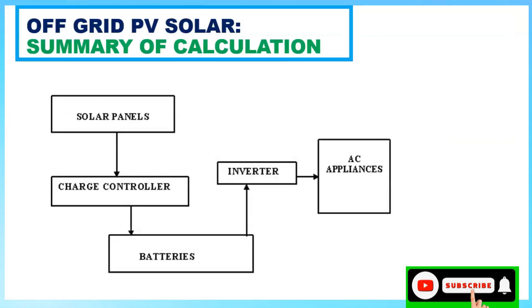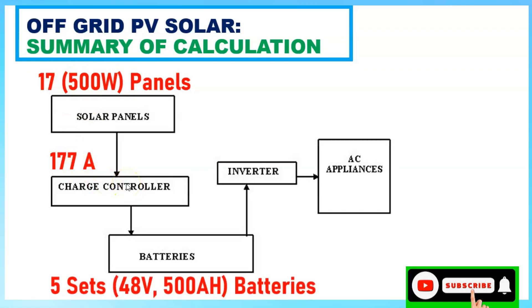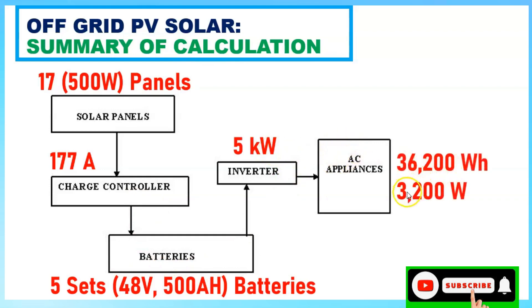Summary of all calculations: 17 sets of 500-watt solar panels, a 177-ampere charge controller, 5 sets of 48V 500 Ah batteries, and a 5 kilowatt inverter — for a load of 3,200 watts and 36,200 watt-hours total energy. You can now visualize the complete solar power flow: panels → charge controller → batteries → inverter → home loads.